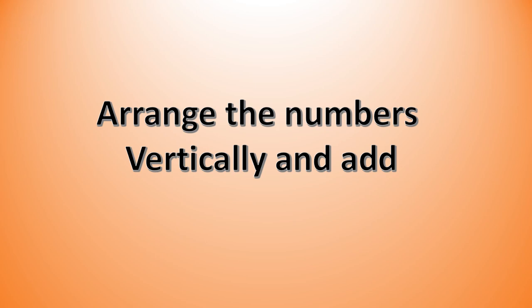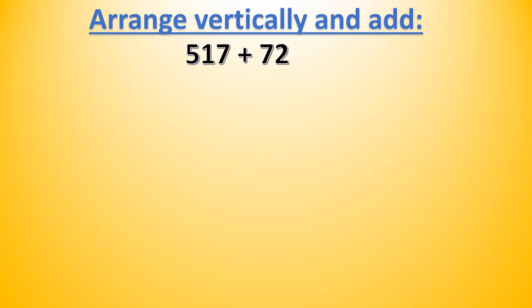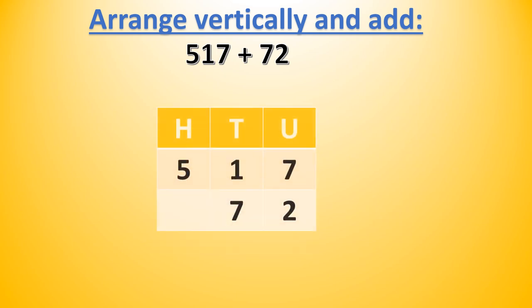Now let us learn to arrange the numbers vertically and then add. 517 plus 72. To arrange these numbers vertically, first we write the place values — that is hundreds, tens, and units. In 517 we have 5 hundreds, so we write 5 in the hundreds column, 1 in the tens column, and 7 in the units column. In 72 we have 7 tens and 2 units.